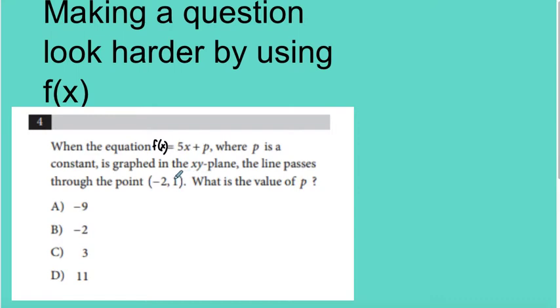Let's make a question. They sometimes like to make questions look harder by using f of x. Now let's look at this question. It says when the equation f of x equals 5x plus p, where p is a constant, that's actually important, because that's telling me p is a number, not a variable. Even though it looks like a variable, it's a number. So where p is constant is graphed in the xy plane, the line passes through the point negative 2, 1. What is the value of p?